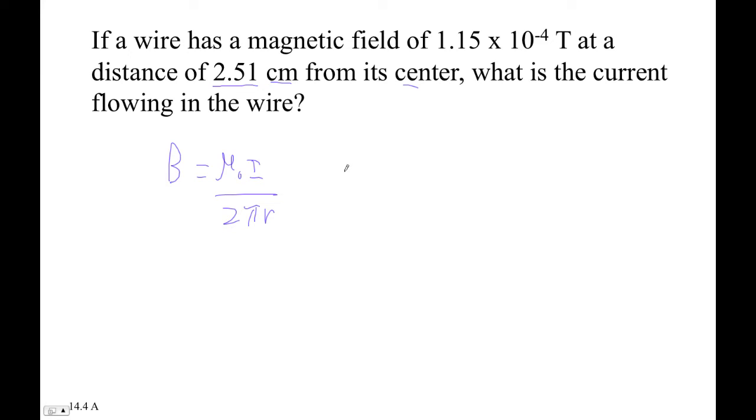All right, so let's plug this in. 1.15 times 10 to the minus 4th teslas equals 4 pi times 10 to the minus 7th tesla meters per amp, right? Times a current that we don't know, divided by 2 pi times 0.0251 meters.